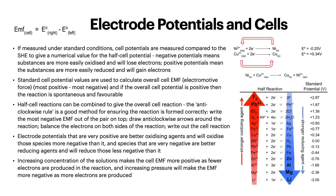If measured under standard conditions, cell potentials are measured compared to the SHE to give a numerical value for the half-cell potential. Negative potentials mean substances are more easily oxidized and will lose electrons. Positive potentials mean substances are more easily reduced and will gain electrons. Standard cell potential values are used to calculate overall cell EMF — electromotive force — most positive minus most negative. If the overall cell potential is positive, the reaction is spontaneous and favorable. Half-cell reactions can be combined to give the overall cell reaction. The anticlockwise rule is a good method: write the most negative EMF on top, draw anticlockwise arrows, balance the electrons on both sides, and write out the cell reaction.